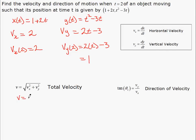So velocity is going to be the square root of 2 squared plus 1 squared which is square root of 5 or approximately 2.236.